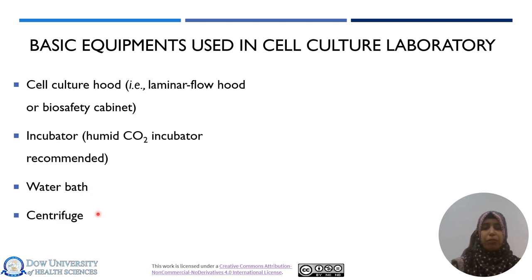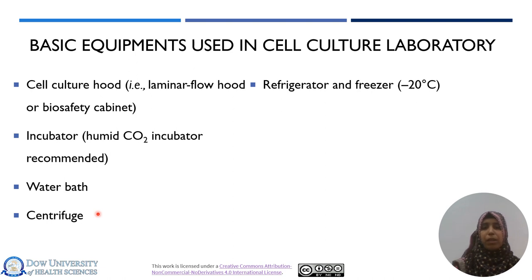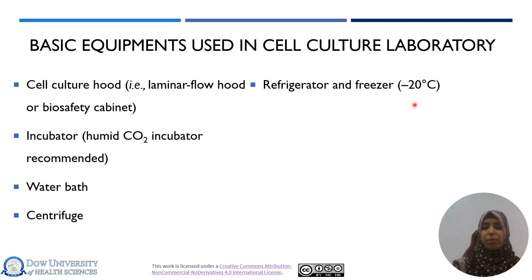Then we have the centrifuge, because in order to pellet down your cells, you need centrifugation in your cell culture laboratory. You should also have functional freezers and refrigerators, as most media are stored at 4 to 8 degrees centigrade, while serum, trypsin, and some other required reagents are stored at minus 20 degrees centigrade.